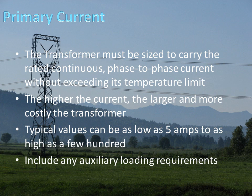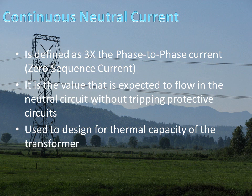Primary current is what the transformer is sized to carry as the rated continuous phase-to-phase current without exceeding its temperature limit — a basic parameter of all transformer design. The higher the current, the larger and more costly the transformer. Typical values can be as low as 5 amps or as high as a few hundred. Include any auxiliary loading requirements if you have a Y-connected primary providing a secondary load. The continuous neutral current is defined as three times the phase-to-phase current because it is zero-sequence current and the neutral sees all three phases simultaneously. It is the value expected to flow in the neutral circuit without tripping protective circuits — a continuous, unbalanced neutral current that flows in the system all the time. This is not a fault event; it is used to design the thermal capacity of the transformer.